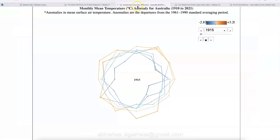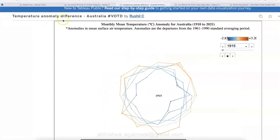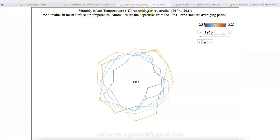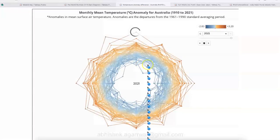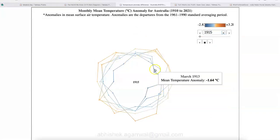So third one is the temperature anomaly difference. And this is created by Racial C. This is a voted visualization. What it is, is basically the monthly mean temperature in degree Celsius anomaly for Australia, 1910 to 2021. Very important at this point because you have Fahrenheit and you have Celsius.